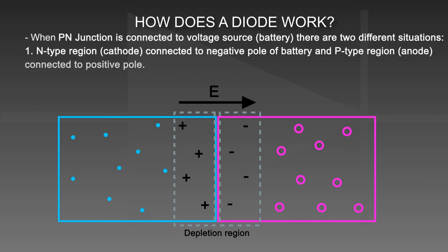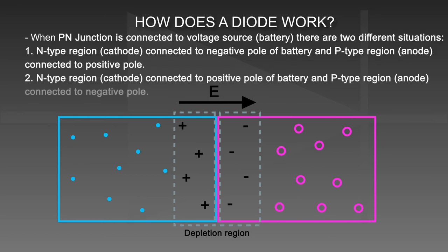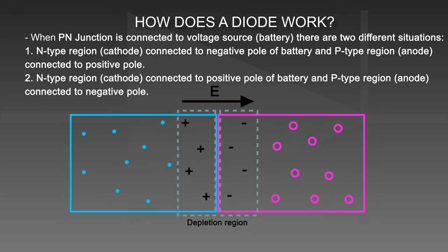When a P-N junction is connected to a voltage source — a battery — there are two different situations. In situation 1, the N-type region (cathode) is connected to the negative pole of the battery and the P-type region (anode) is connected to the positive pole.